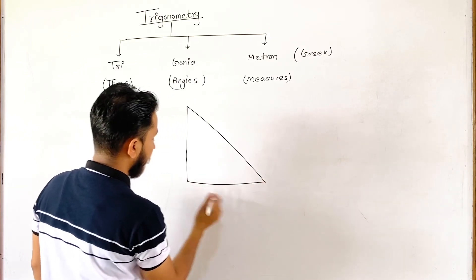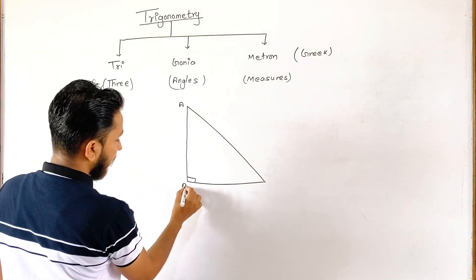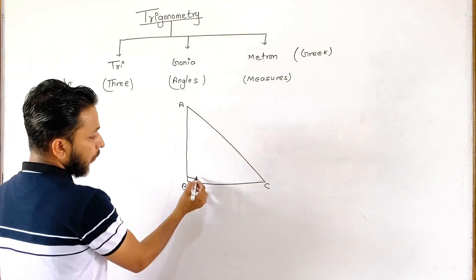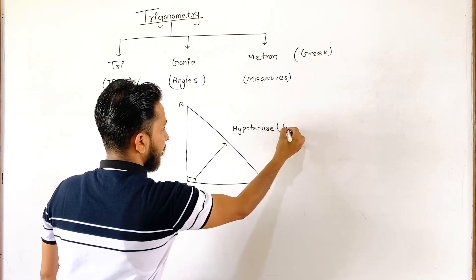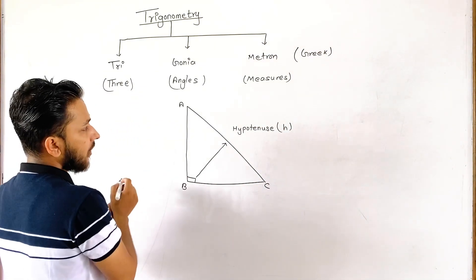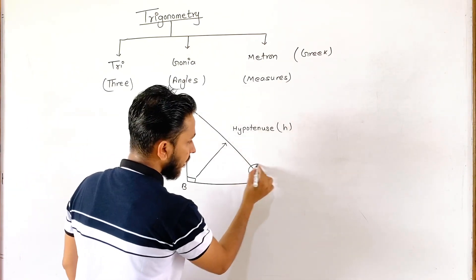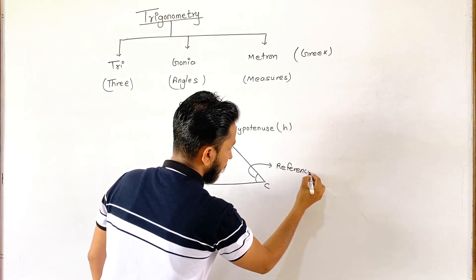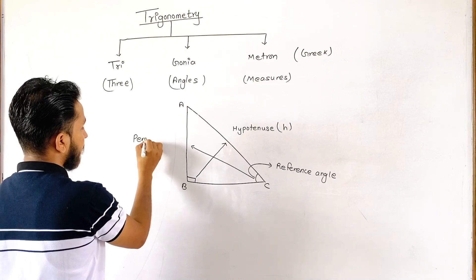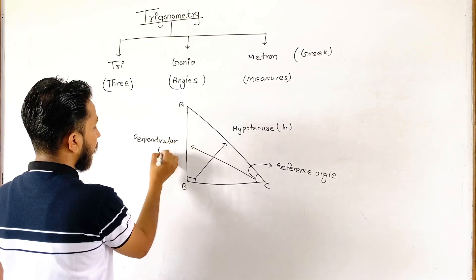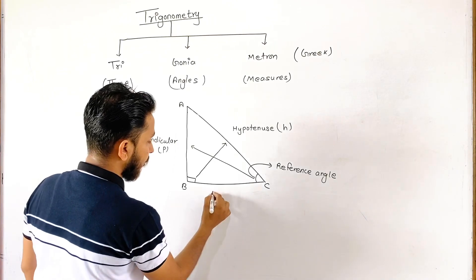In a right angle triangle with vertices A, B, and C, the side which is opposite to 90 degrees is known as the hypotenuse, represented by H. It is also represented by P, and the side between the 90 degree angle and the reference angle is known as the base.